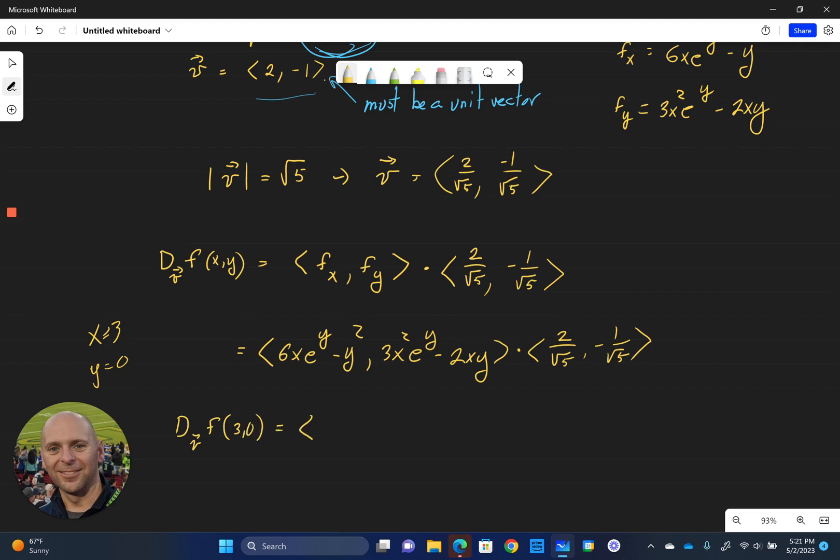Okay, so let's go ahead and run that through. e to the 0 is going to be 1, so this first term here is going to look like 6 times 3, which is 18, minus y squared. And again, y is 0, so that's just going to be 18. For the second piece, x is equal to 3. Again, e to the 0 is 1, so we get 3 squared, which is 9, times 3 again, which is 27, minus 0. So we don't need that piece. So there's our vector.